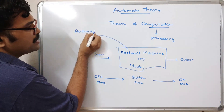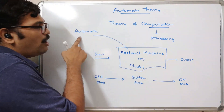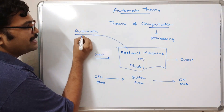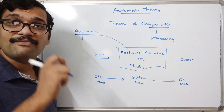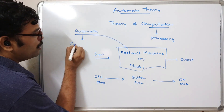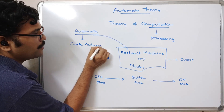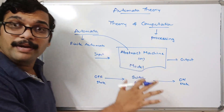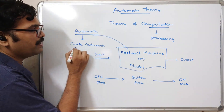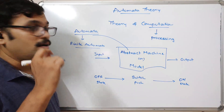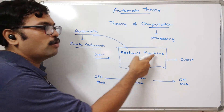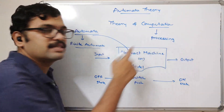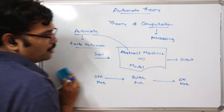These abstract machines or models are called automata — that means low-level implementations. If this model or machine is implemented within a finite number of states, then it is called a finite automata. So finite automata is the abstract or mathematical model which takes the input, processes it, and gives the output.